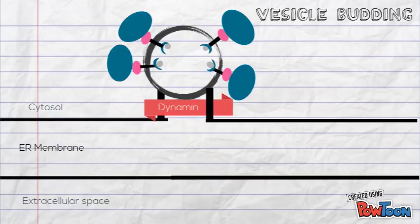Dynamin, a small GTP binding protein, gathers around the neck of the vesicle bud and with other recurrent proteins causes the ring to constrict, thereby releasing the vesicle from the membrane.